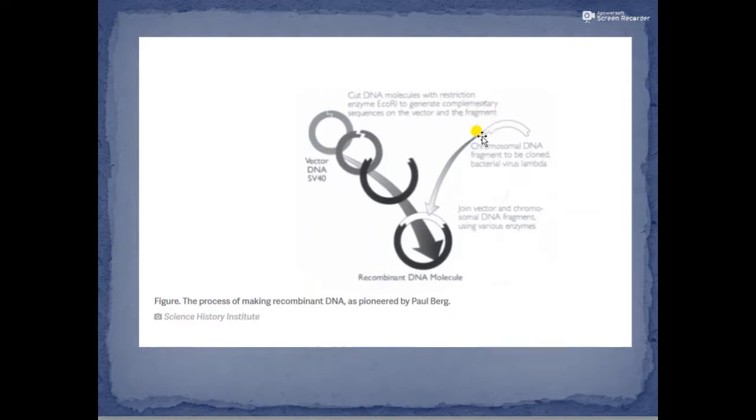He cut the lambda DNA also with EcoR1, and as a result, the ends of the vector DNA and the gene of interest were found to be matching. The reason you cut the vector and gene of interest with the same restriction enzyme is that they form sticky ends compatible with each other. After that, the vector DNA and chromosomal DNA are joined together.